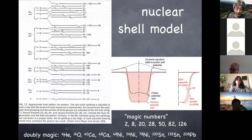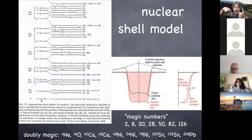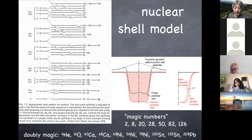Helium-4 is doubly magic. If you fill the lowest level of the harmonic oscillator, you can put one proton with spin up and another proton with spin down — that's two protons — and the same for neutrons, spin up and spin down. So you put two protons and two neutrons to occupy all available states at the 1s level, giving a very stable nucleus.